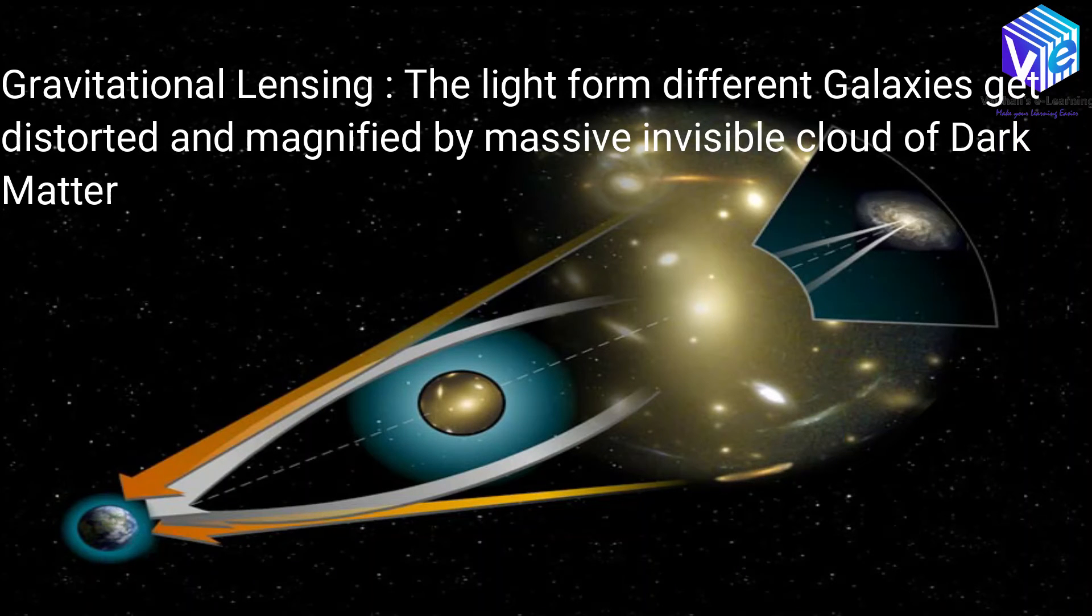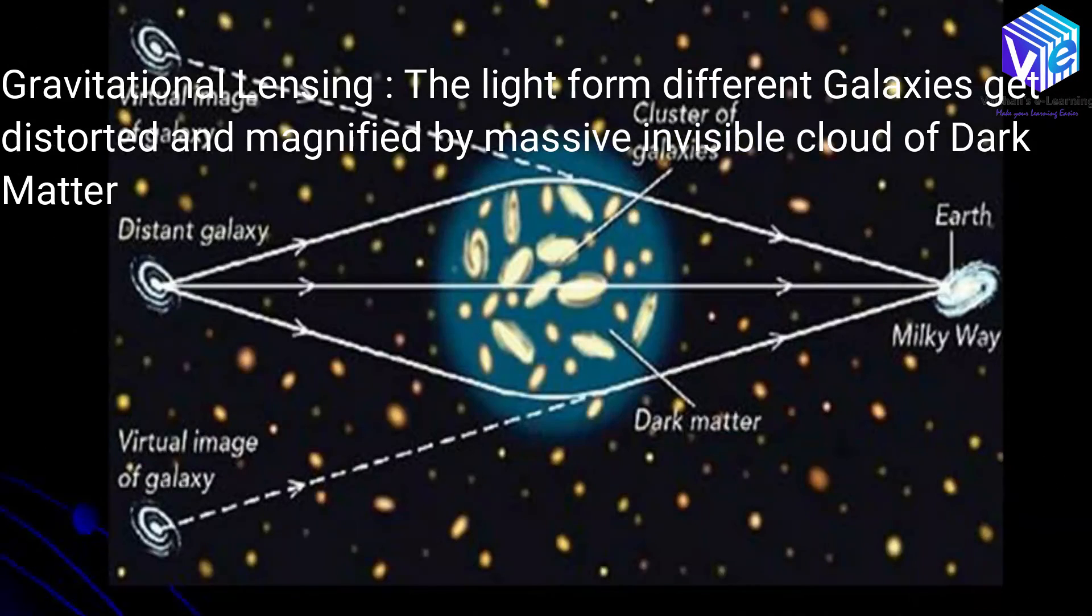The light from distant galaxies gets distorted and magnified by massive invisible clouds of dark matter in the phenomenon known as gravitational lensing.